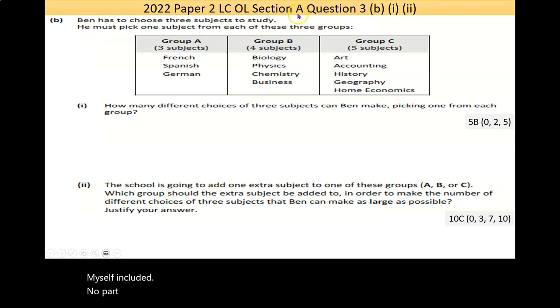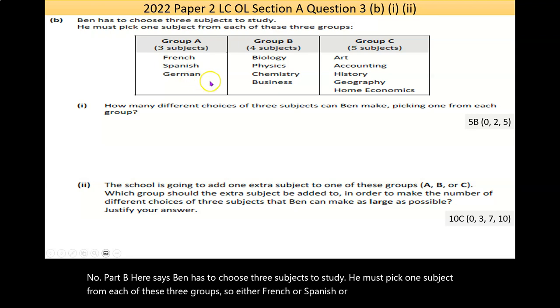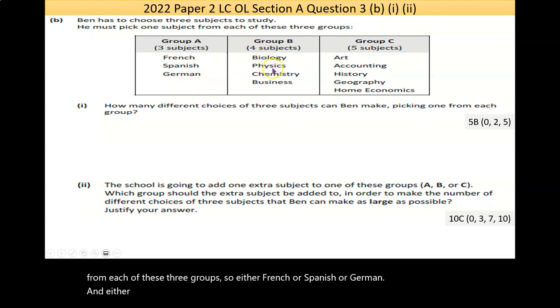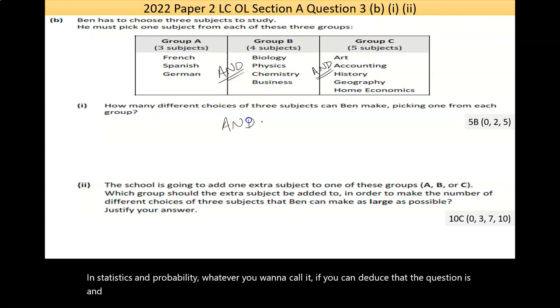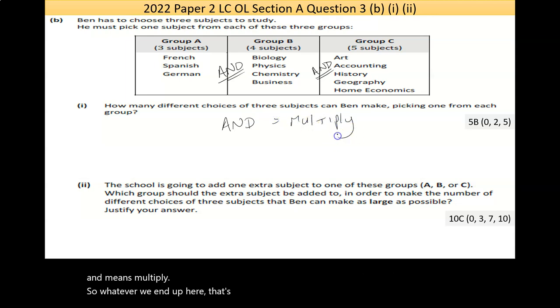Now part B here says, Ben has to choose three subjects to study. He must pick one subject from each of these three groups, so either French or Spanish or German, and either physics, chemistry, biology, or business, and the important word there I keep saying is and. Now in statistics or probability, whatever you want to call it, if you can deduce that the question is and, and means multiply. So whatever we end up here, that's what we're probably going to have to do, although I should read the question.